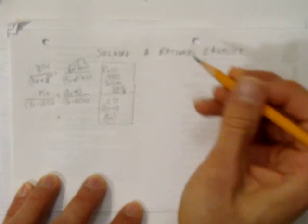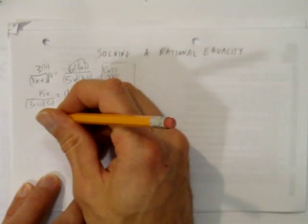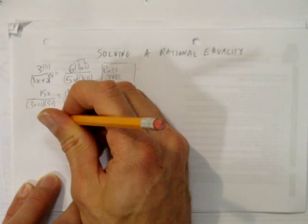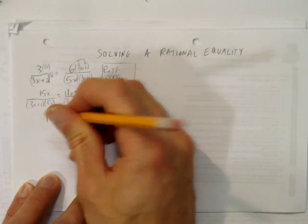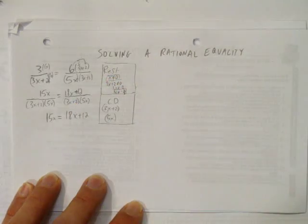Those denominators, only when we have an equality, not for an inequality, only for an equality, we can get rid of these denominators. Multiply both sides by them, or just think of them as being cancelled out or dropped, and we're left with a simple linear equation.